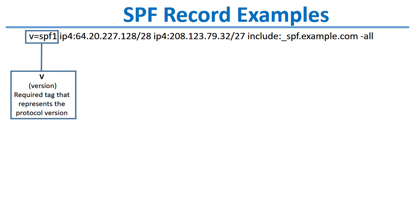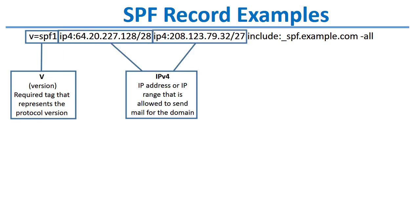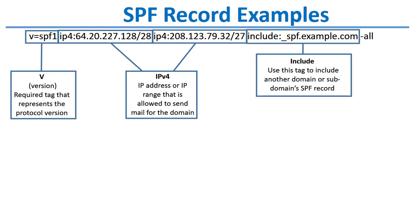The next element in an SPF record indicates what servers are allowed to send mail for the domain, and you can have multiple entries. For example, this SPF record has two IP address ranges authorized to send mail — note the slash at the end of the IP address to specify a range. An SPF record may also contain an include tag, which includes all domain servers specified in another domain or subdomain's SPF record.